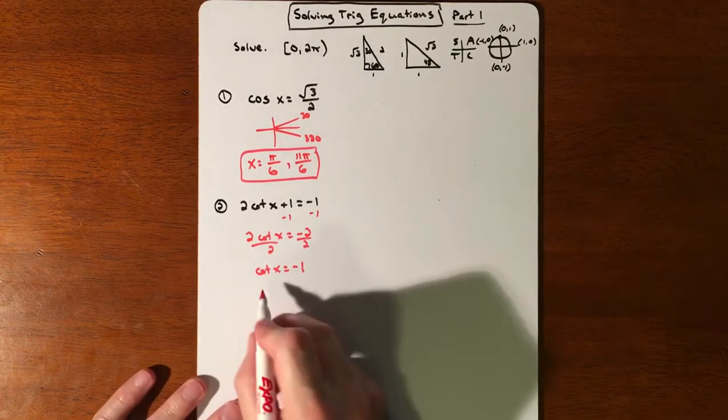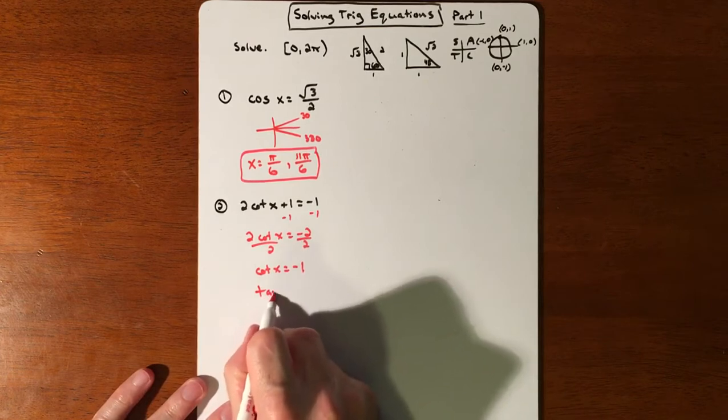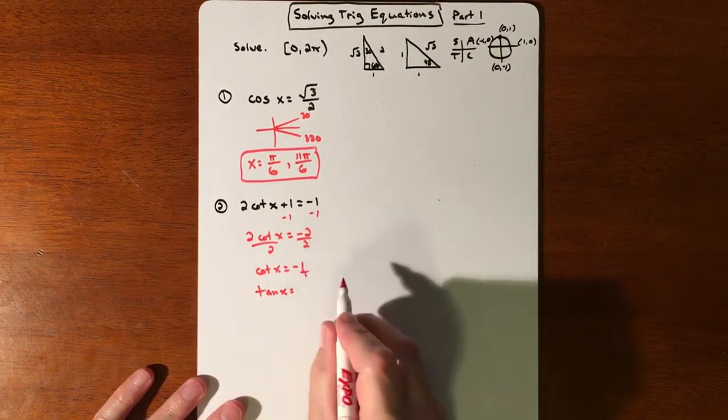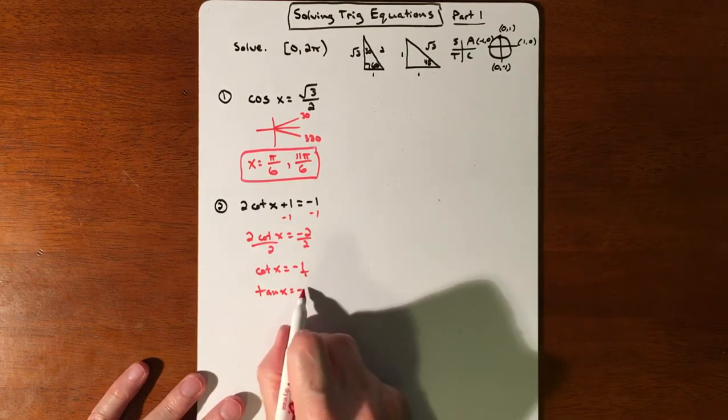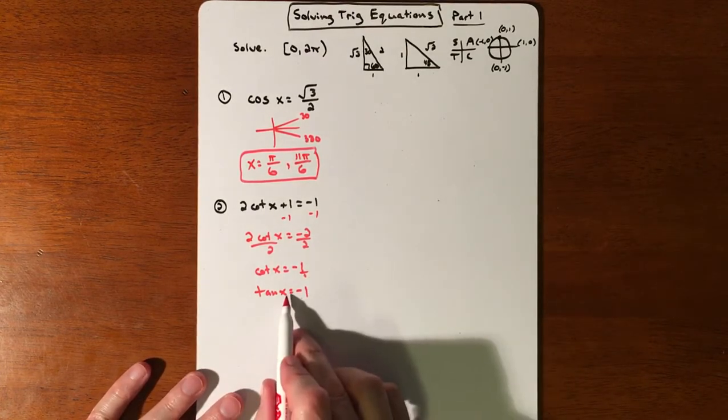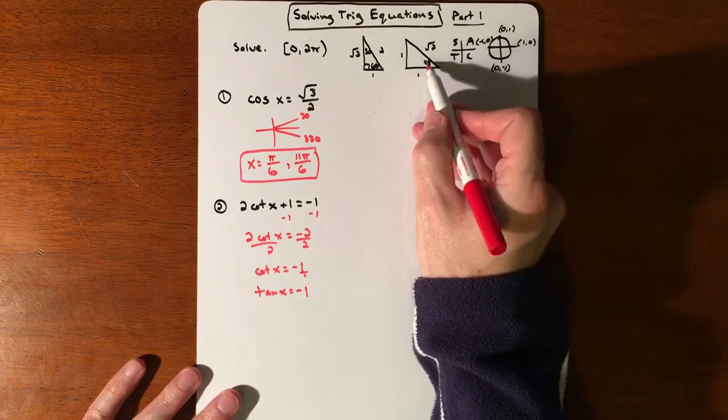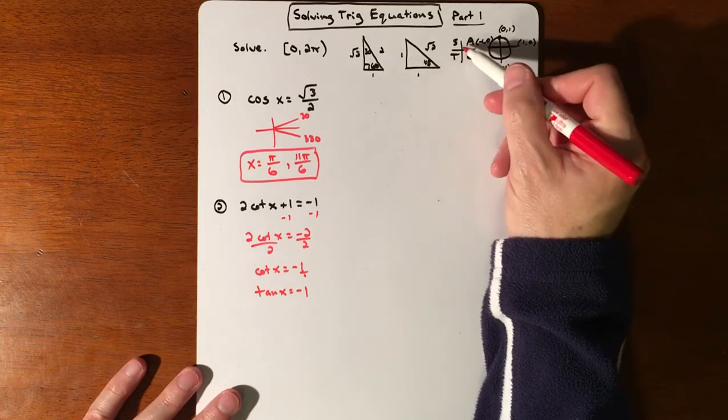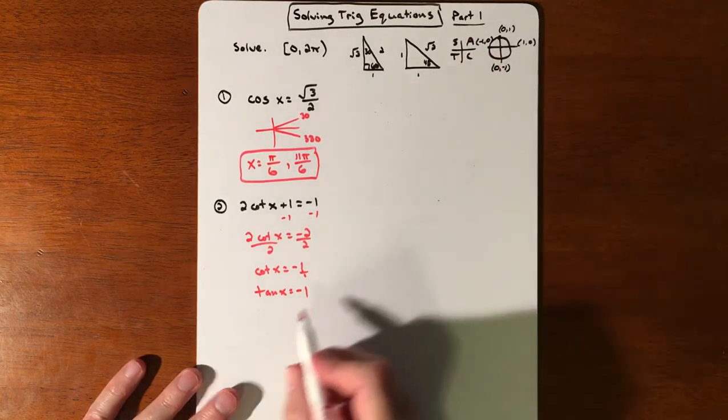Personally, I'd rather do tangent. So if I do tangent here, I need to do the reciprocal of this. If we make this a fraction, the reciprocal of negative 1 is just negative 1. So tangent is opposite over adjacent, and we're looking at a 45 degree. Our opposite and adjacent need to match, except we need to be negative.